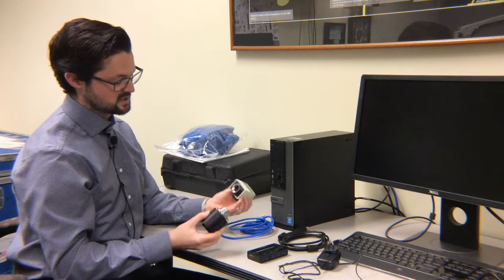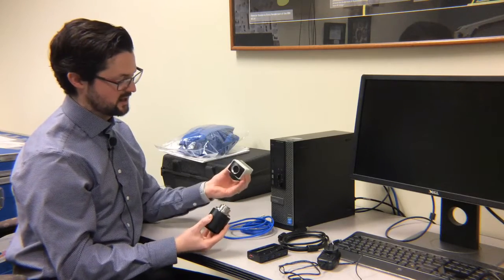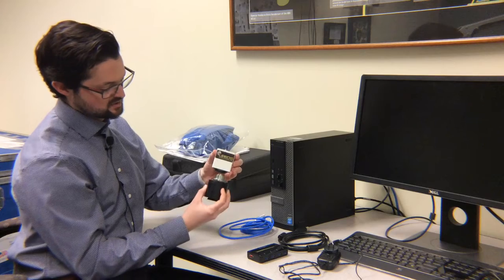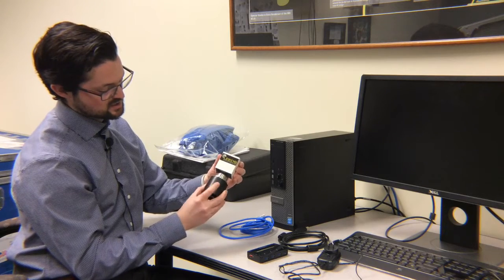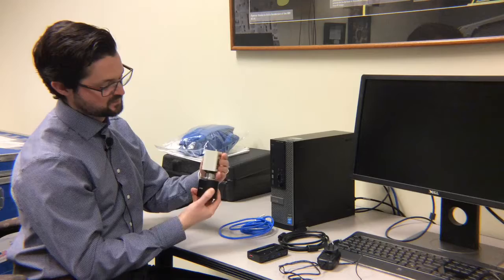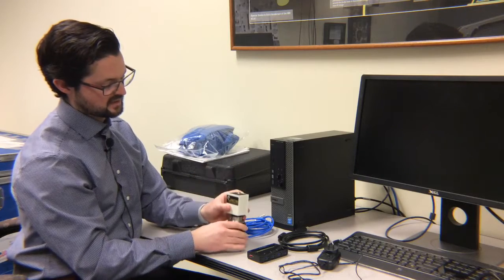Well, first thing to do is just attach your C-mount adapter to your camera. I recommend attaching it this way. It's just a simple threaded mount, screws in. Okay, that's good.